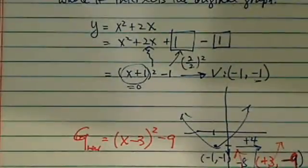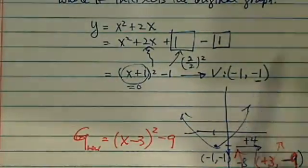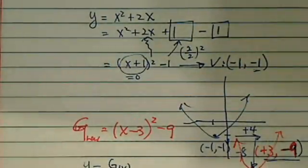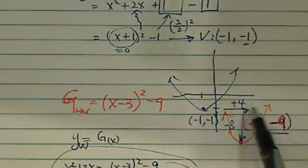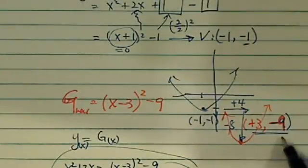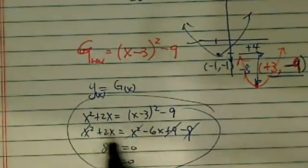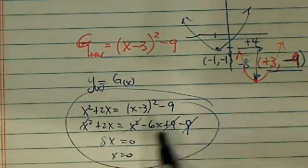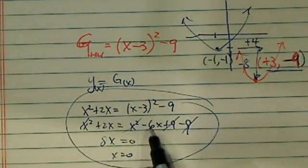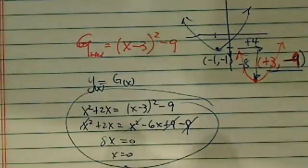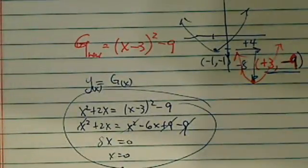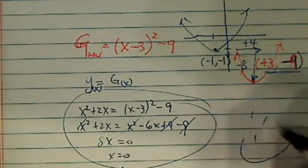Let's double-check everything. The original vertex is at (-1, -1). It went 4 units to the right and 8 units down, giving the new vertex at (3, -9). Setting the two equations equal, we have -6x + 9 which cancels out, so x = 0. The graphs intersect at x = 0. Hope this helps. Have a confident day.